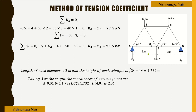Here all triangles are equilateral, so each member — AB, AE, BE, BC, CE, CD, ED — has a side length of 2 meters and a height of √(2²−1²) = 1.732 meters. Taking joint A as the origin: A = (0, 0), B = (1, 1.732), C = (3, 1.732), D = (4, 0), E = (2, 0).